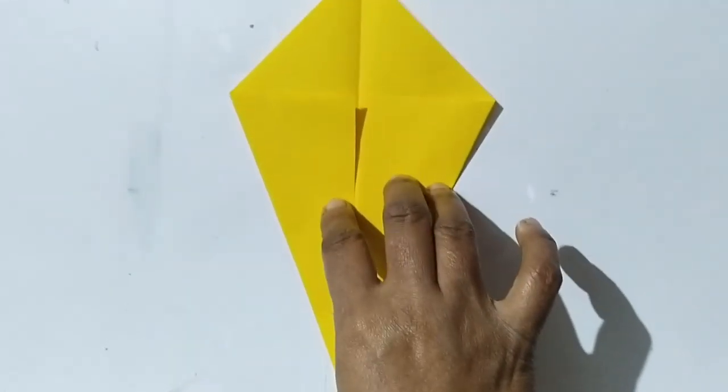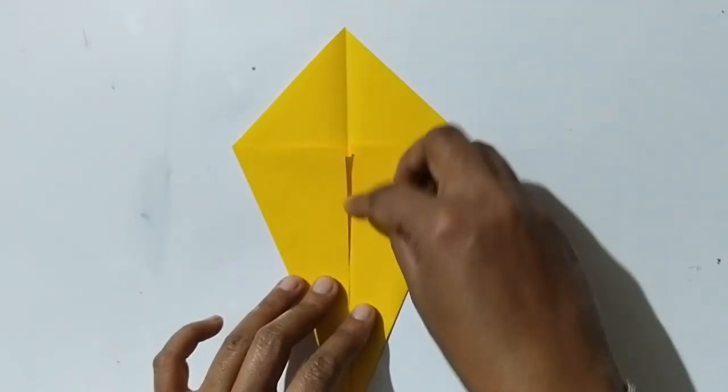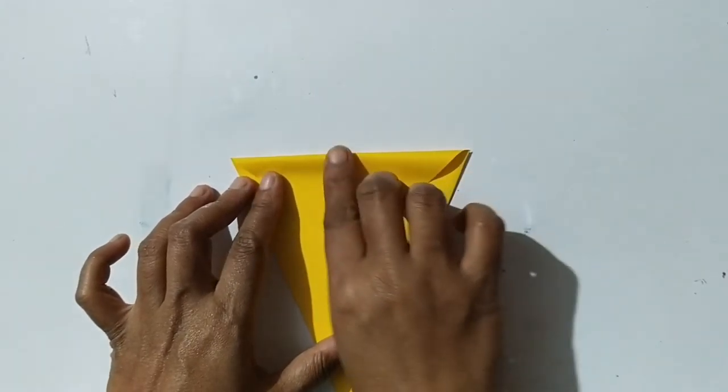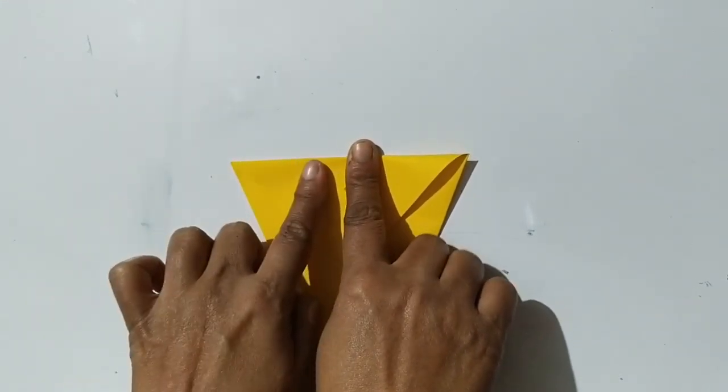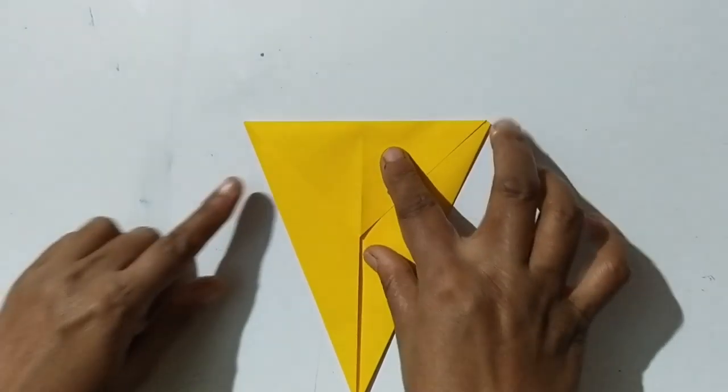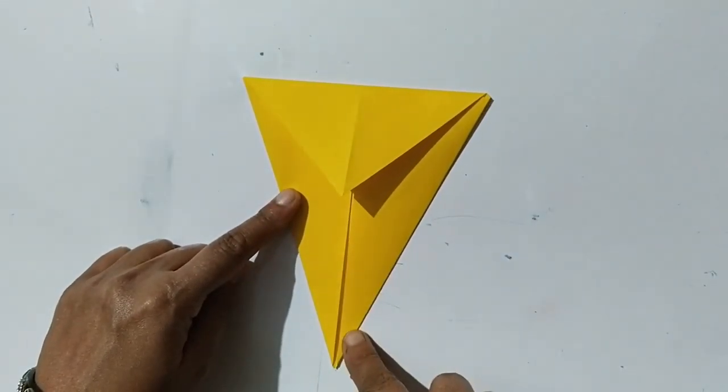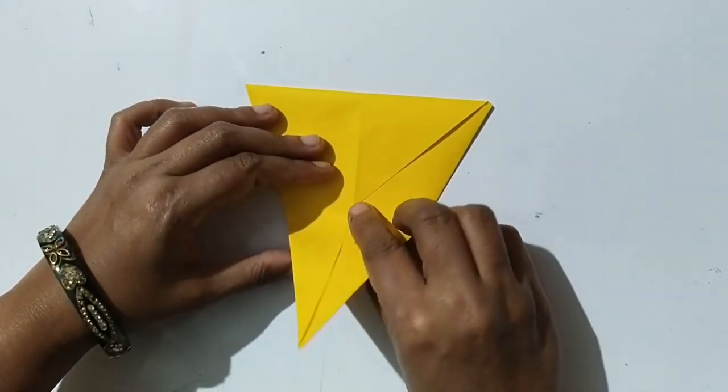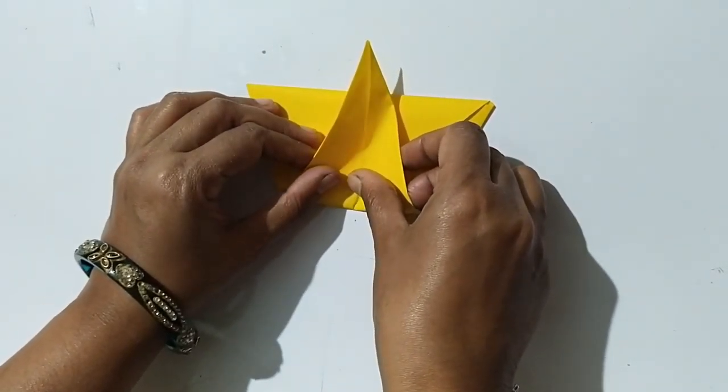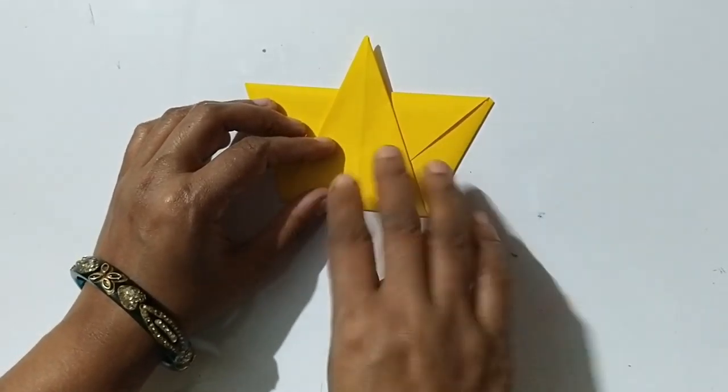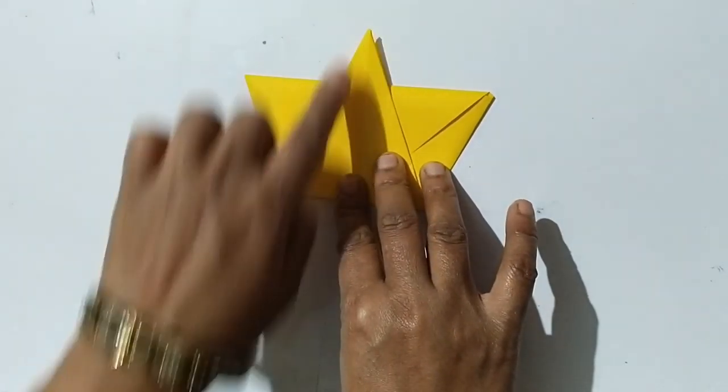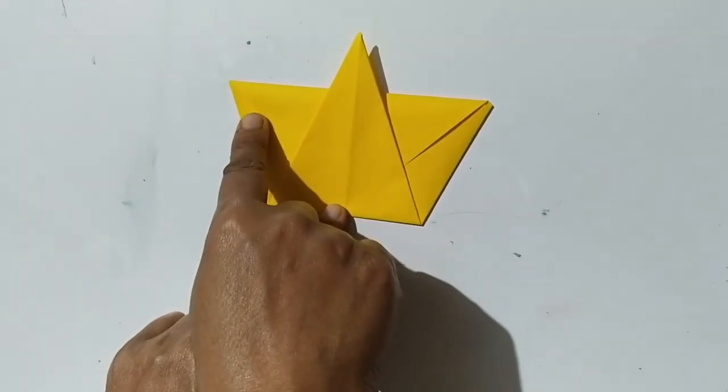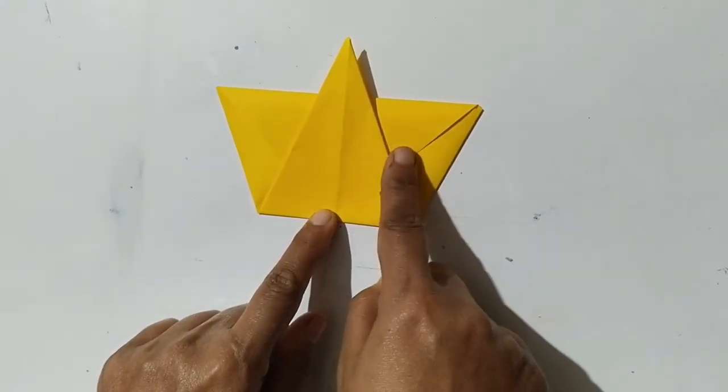Then fold the upper flap downwards. Fold the lower corner upward. Then fold the right and left triangles to overlap each other.